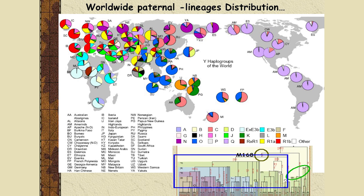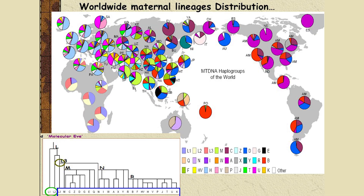Frequency distribution means the proportion of a sample belonging to a particular group. From published data, this graph shows the distribution of different paternal lineage groups across different regions of the world, and similarly, different maternal haplogroups in different regions of the world.